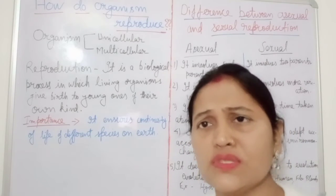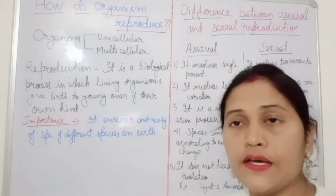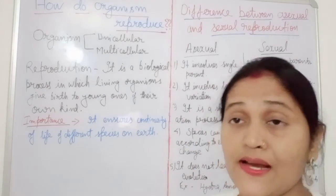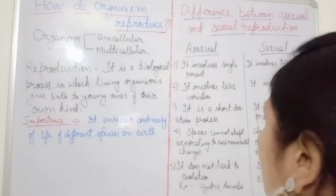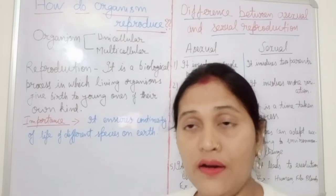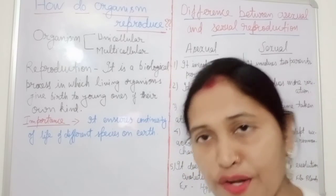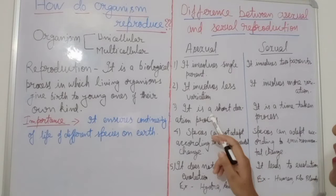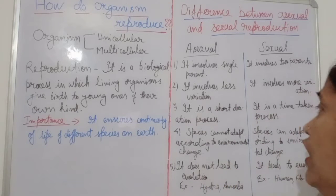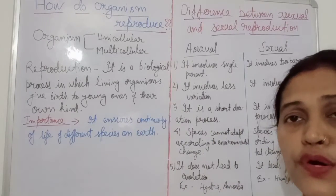In sexual reproduction there is more variation due to exchange of gametes and crossing over, which we will discuss in the next chapter on heredity and evolution. Third difference: asexual reproduction is a short-duration process — less time is required — while sexual reproduction requires a long time to produce new organisms.